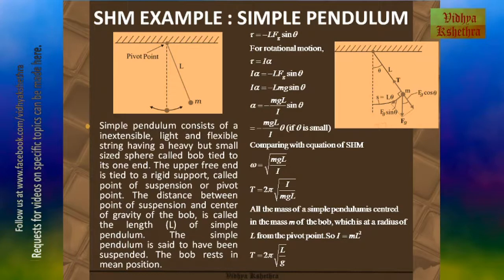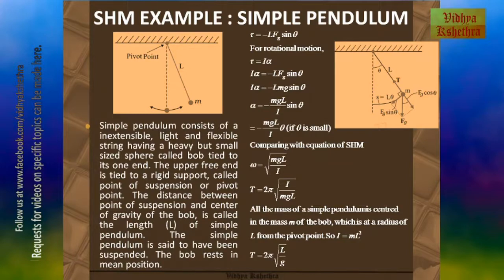The torque experienced by the bob is given by negative l times mg sin θ. For rotational motion, τ equals I times α, where I is the moment of inertia and α is the angular acceleration. So I·α equals negative l·mg·sin θ. The negative sign is because when the pendulum oscillates, θ decreases. From this, the angular acceleration α equals negative mgl by I times sin θ. For a simple pendulum to execute simple harmonic motion, the angular displacement θ must be very small, so we can take sin θ equal to θ.